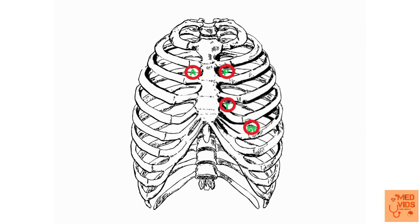These are the auscultatory areas — where you listen for murmurs of particular valves. For aortic stenosis murmurs, auscultate the aortic area at the second right intercostal space. The pulmonary area is the second left intercostal space. The tricuspid area is the left fourth intercostal space, just adjacent to the sternum parasternally.